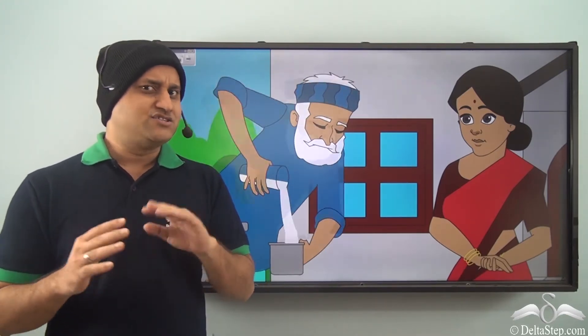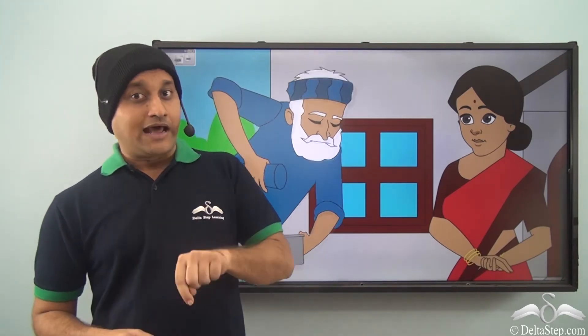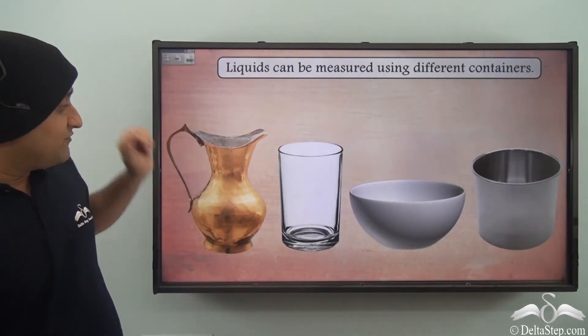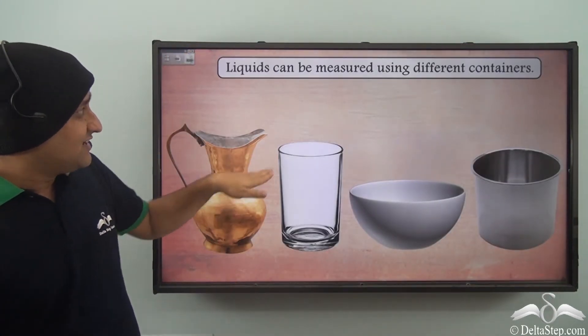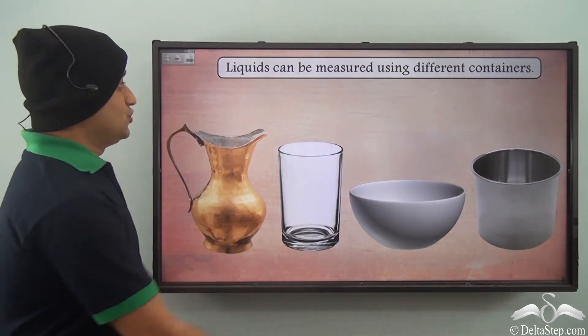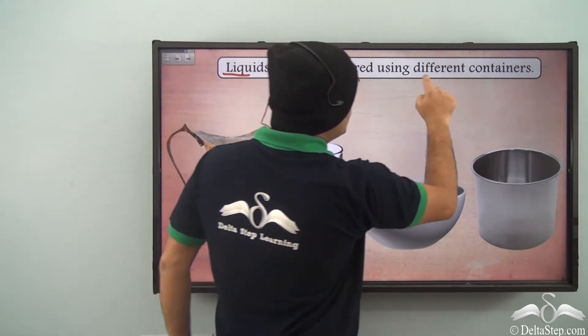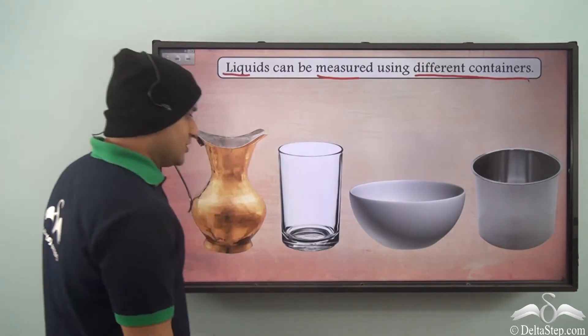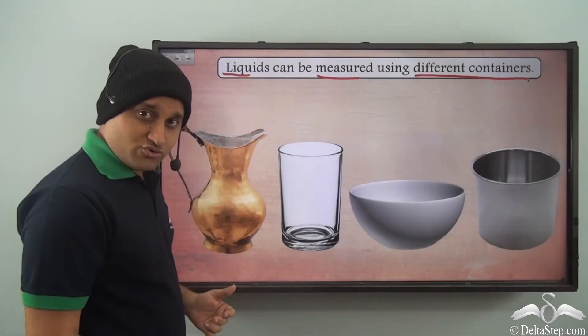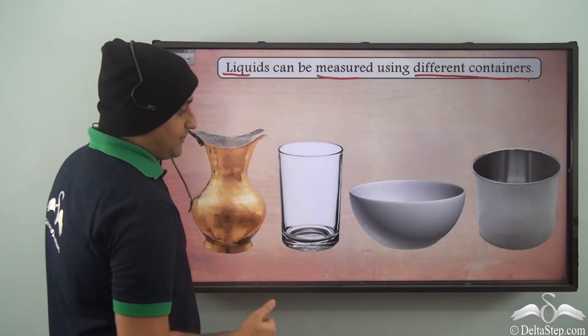Liquids require measurement just like anything else. These liquids are measured using particular containers. When we talk about liquids, different types of containers can be used to measure them.